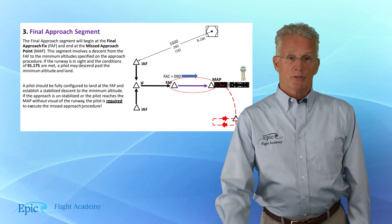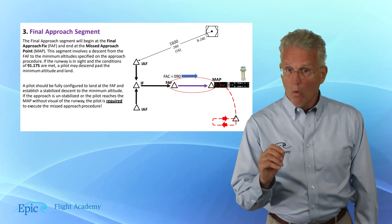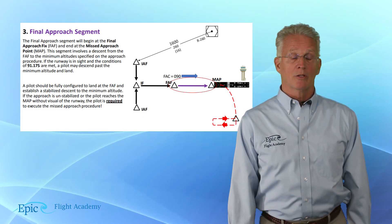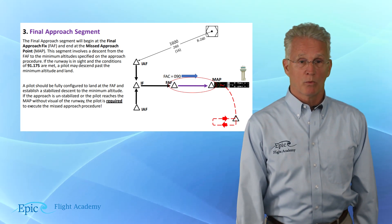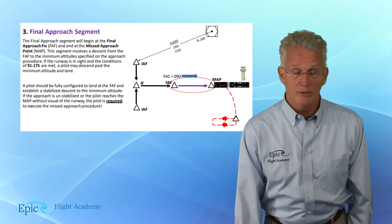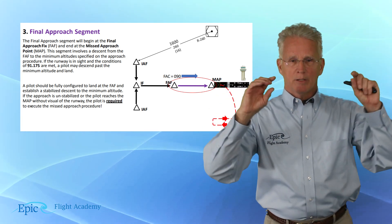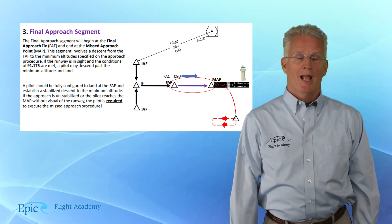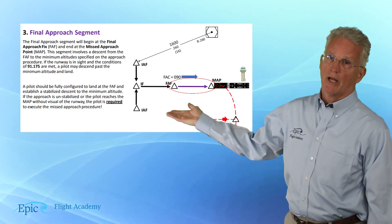If the approach is unstabilized or the pilot reaches the missed approach point without the requirements of 91-175 in place, then the pilot is required to execute a missed approach. And that brings us to the next slide.